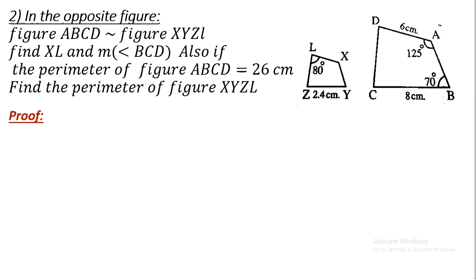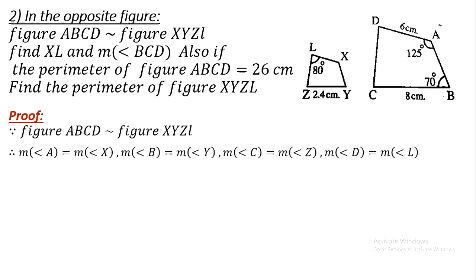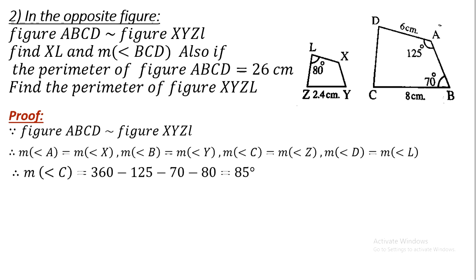Since the two figures are similar: measure of angle A equals measure of angle X, measure of angle B equals measure of angle Y, measure of angle C equals measure of angle Z, and measure of angle D equals measure of angle L. Since this is a quadrilateral, the sum of interior angles equals 360 degrees. Therefore, measure of angle C equals 360 minus 125 minus 70 minus 80 degrees, which equals 85 degrees.